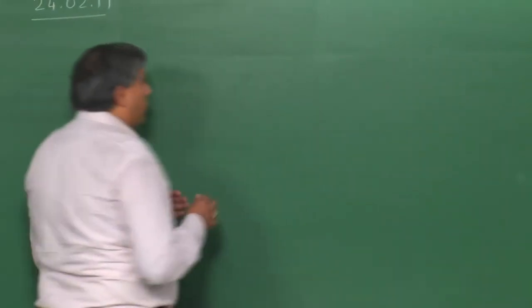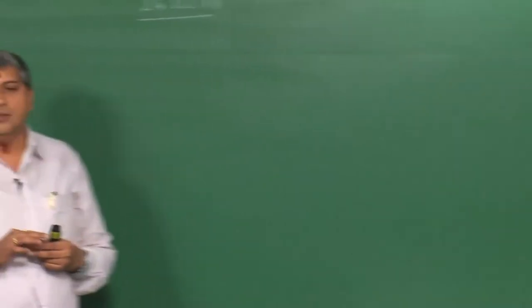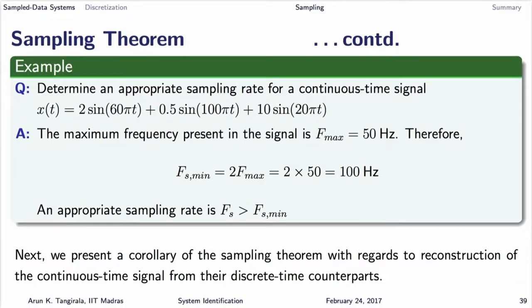The recommendation of the sampling theorem is based on the phenomenon of aliasing. Why does aliasing occur? Why is there a sampling theorem? What happens if I do not follow it? If I sample lower than what is recommended, then I run into aliasing.